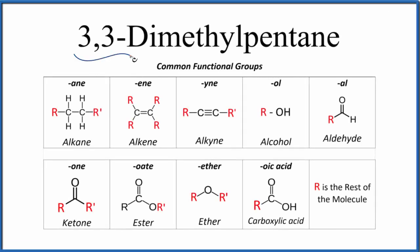Let's write the structure for 3,3-dimethylpentane. This is also called isobutanol. To write the structure, first thing we need to realize is A-N-E. That ending A-N-E means we have an alkane. Alkanes are all carbons and hydrogens single bonded.